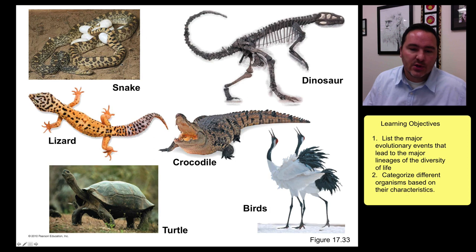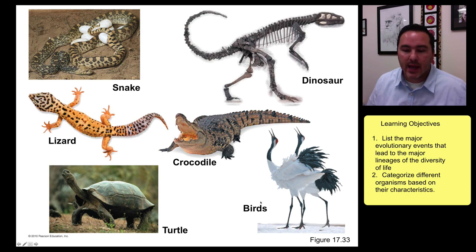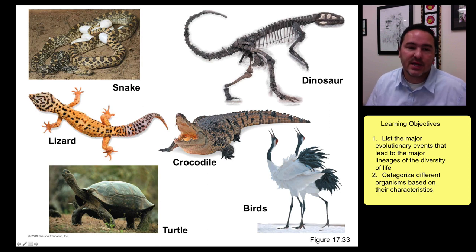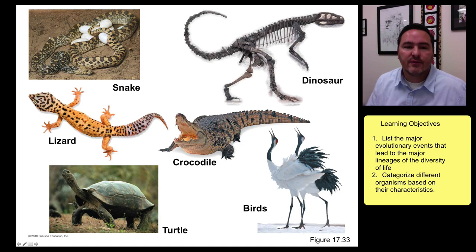Tetrapody leads to things like crocodiles, dinosaurs, lizards, turtles, and birds. Snakes, of course, lost their legs secondarily — but ancestrally snakes did have legs. In fact, in some snakes you can still see the vestigial structures of a hind limb.